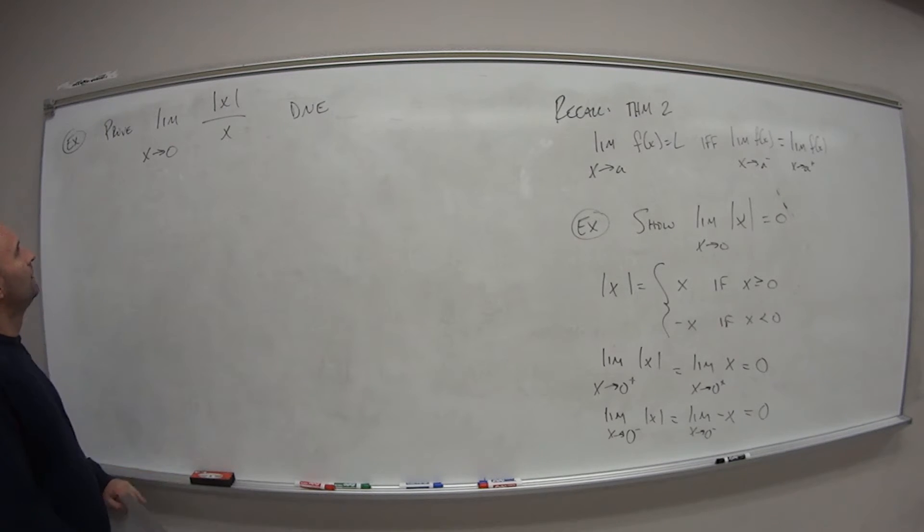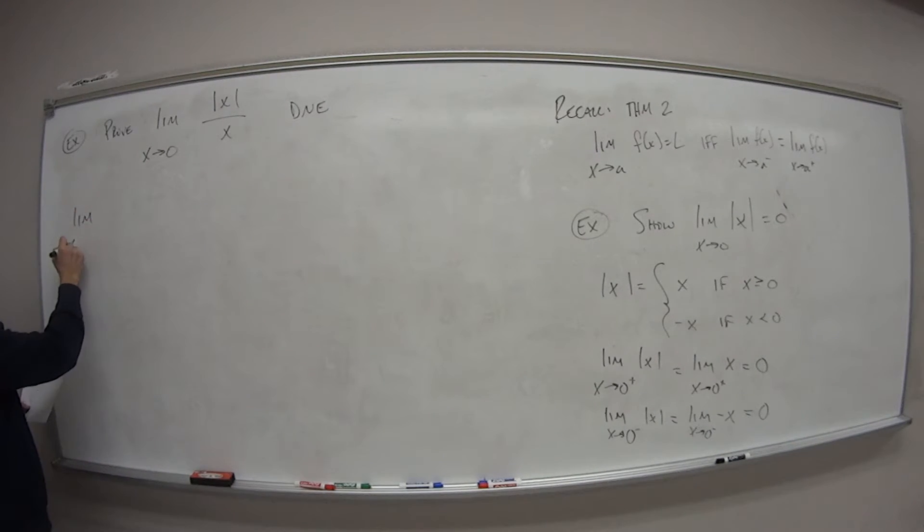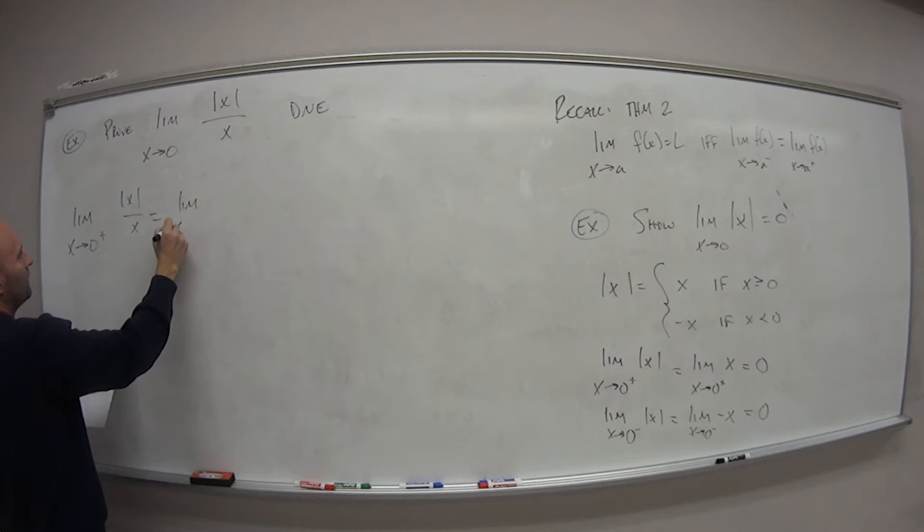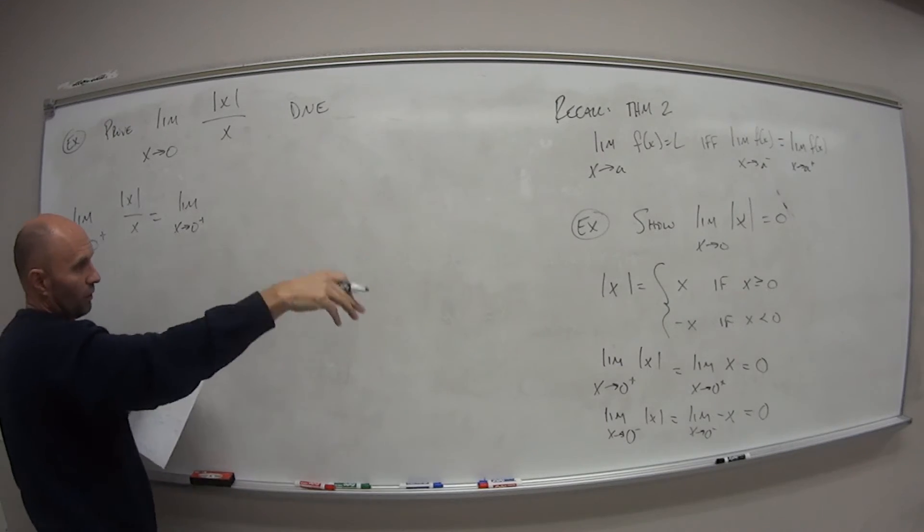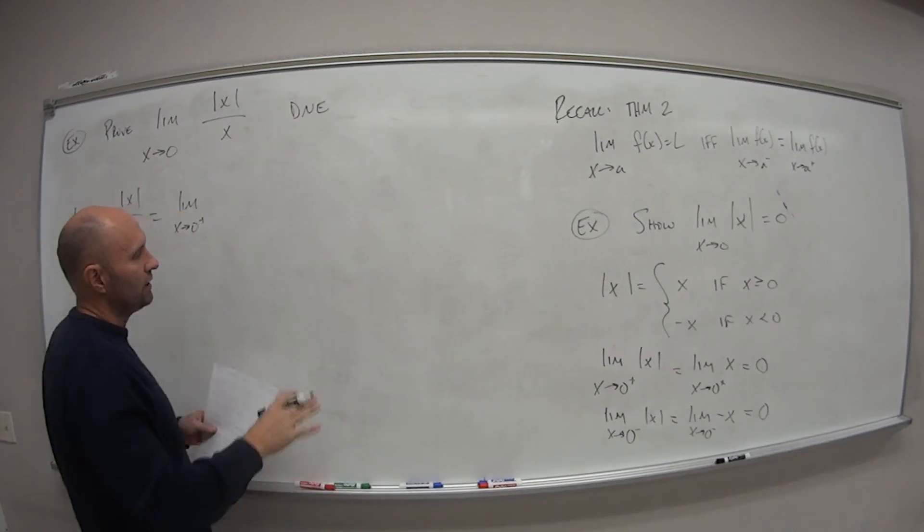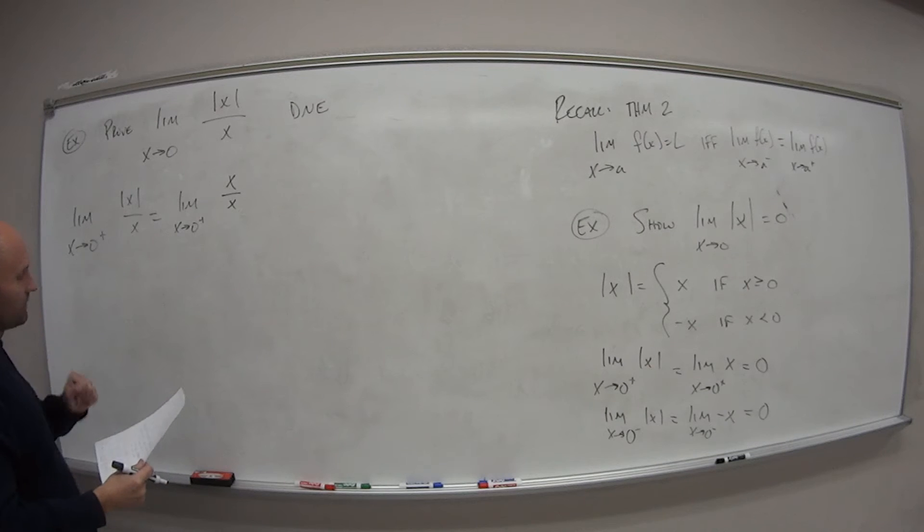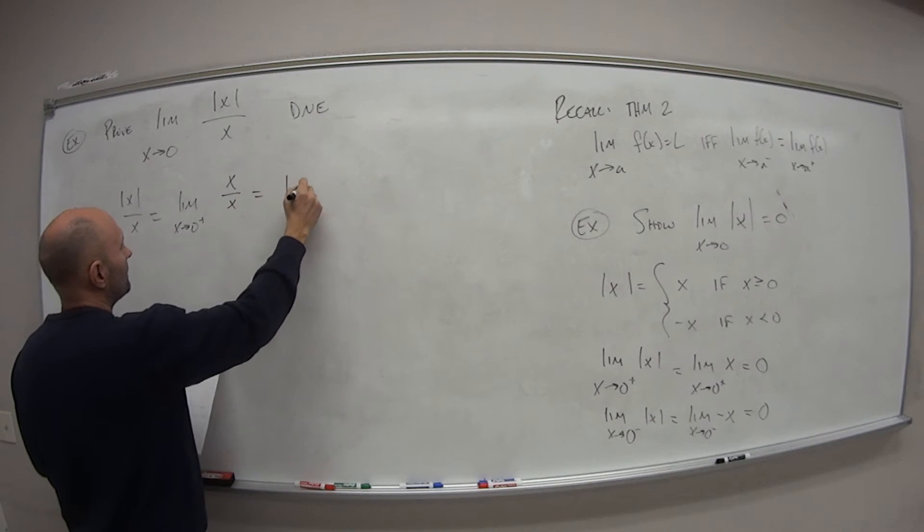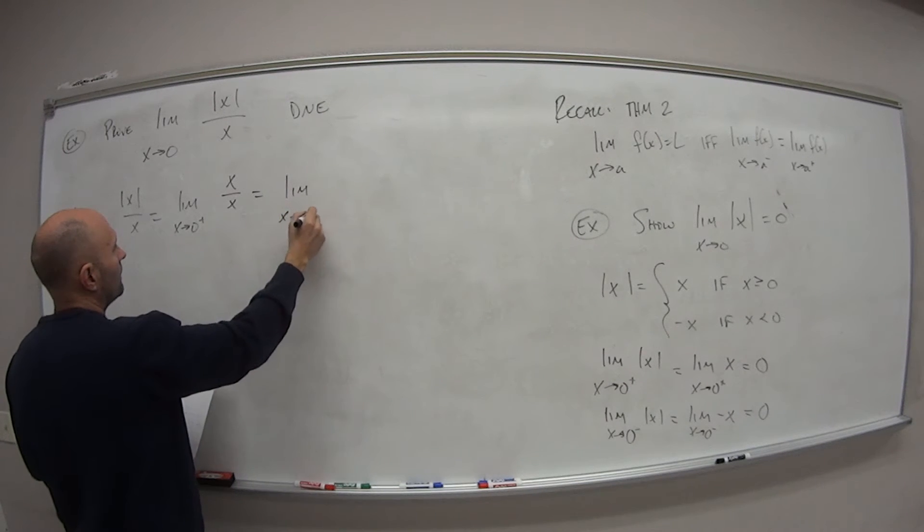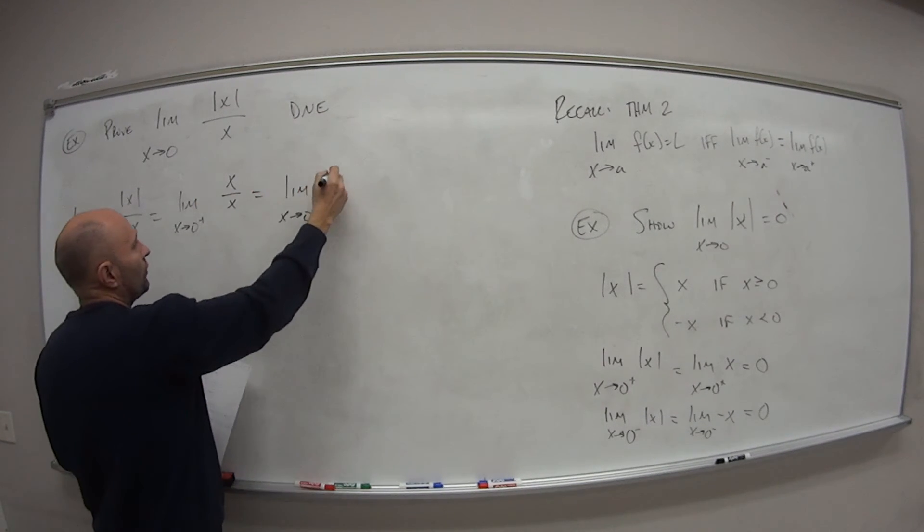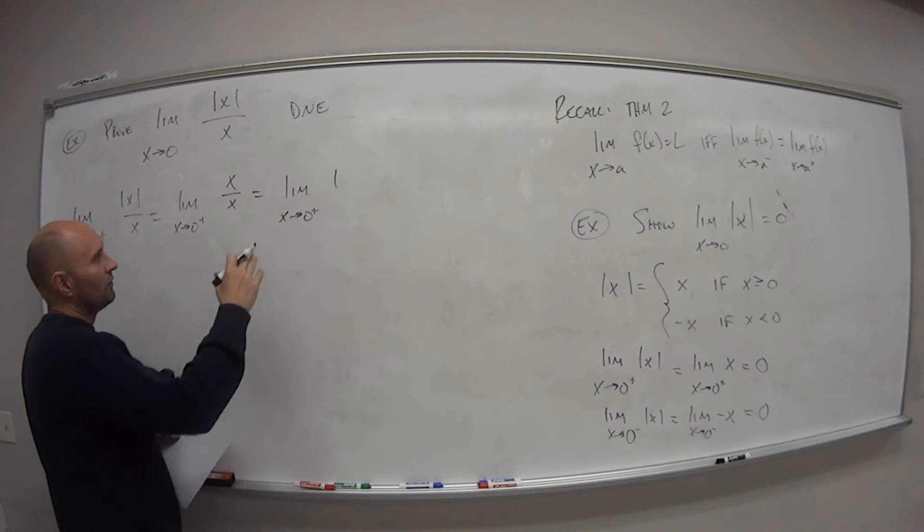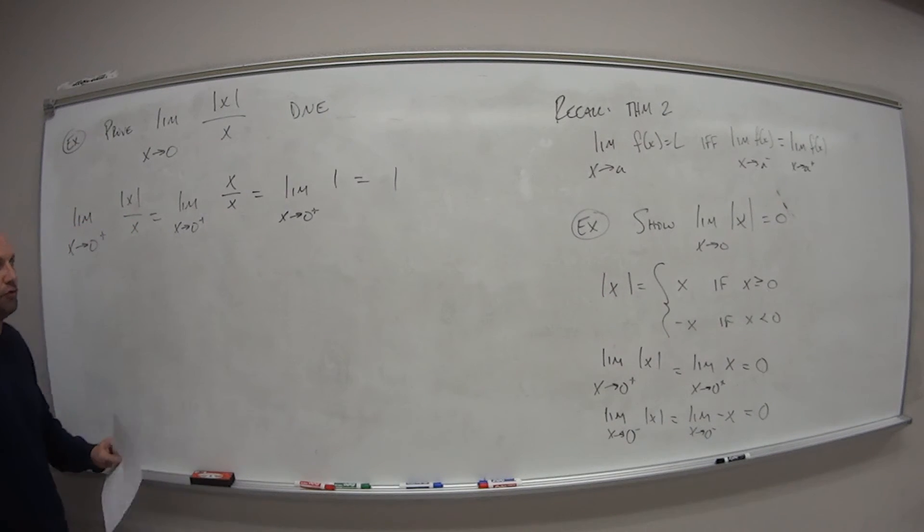Alright, welcome back. So we're going to try to prove this using theorem 2. So first, the limit as x approaches 0 from the right side of the absolute value of x over x is equal to the limit as x approaches 0 from the right side. Well, again, this is what our absolute value function is. So when we're greater than 0, it's just going to be x over x, which is the limit as x approaches 0. X over x is what? It's equal to 1. So when we have a constant, no matter what we're approaching, it's always going to be this value, which is just 1.